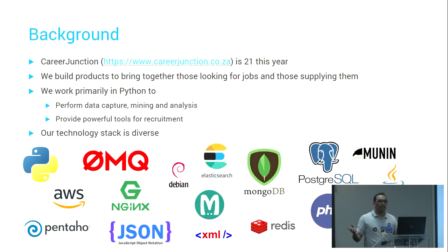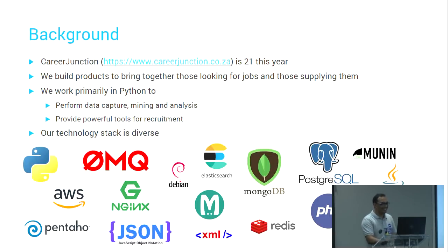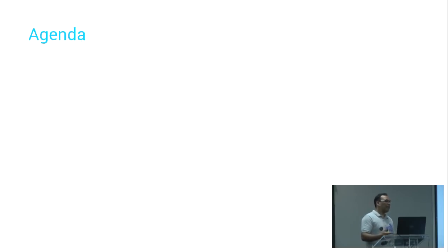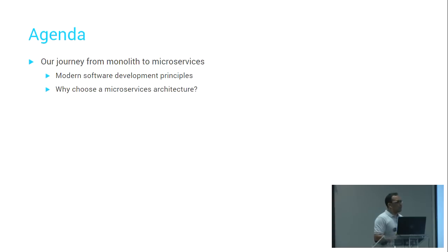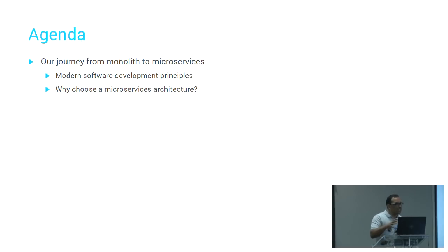Our technology stack is quite varied. In the first part of the talk I'm going to tell you a story about how Career Junction went from a large monolith to the microservices we have today. I'll briefly cover modern software development and hopefully by the end answer the question: why choose a microservices architecture?